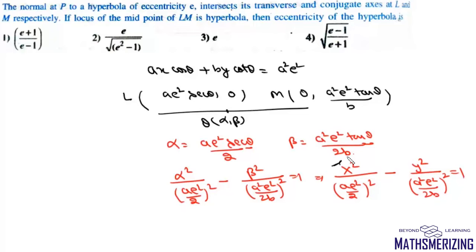Now we need to find the eccentricity for this hyperbola. We know that eccentricity relates B squared, which in this case is A to the power 4 E to the power 4 upon 4B squared, equals A squared, which is A squared E to the power 4 upon 4 times capital E squared minus 1, which is the eccentricity of this hyperbola that we need to find.